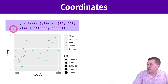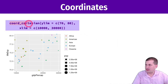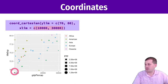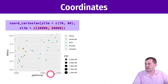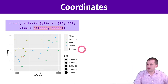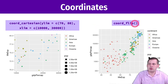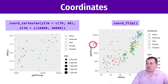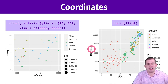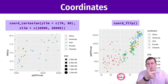Here's an example: with the gapminder health and wealth plot, adding coord_cartesian to zoom between 70 and 80 years and $10,000 to $30,000 in income shows just that sliver, with data still present but outside the view. coord_flip switches life expectancy to the x-axis and GDP per capita to the y-axis. Really, the only common use case for coordinate layers is zooming in on something in a plot.